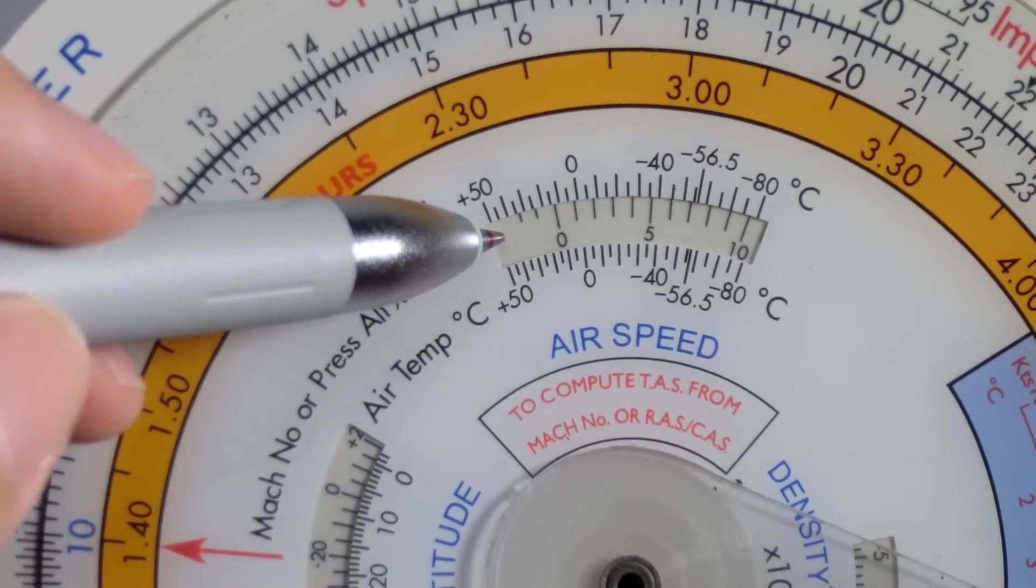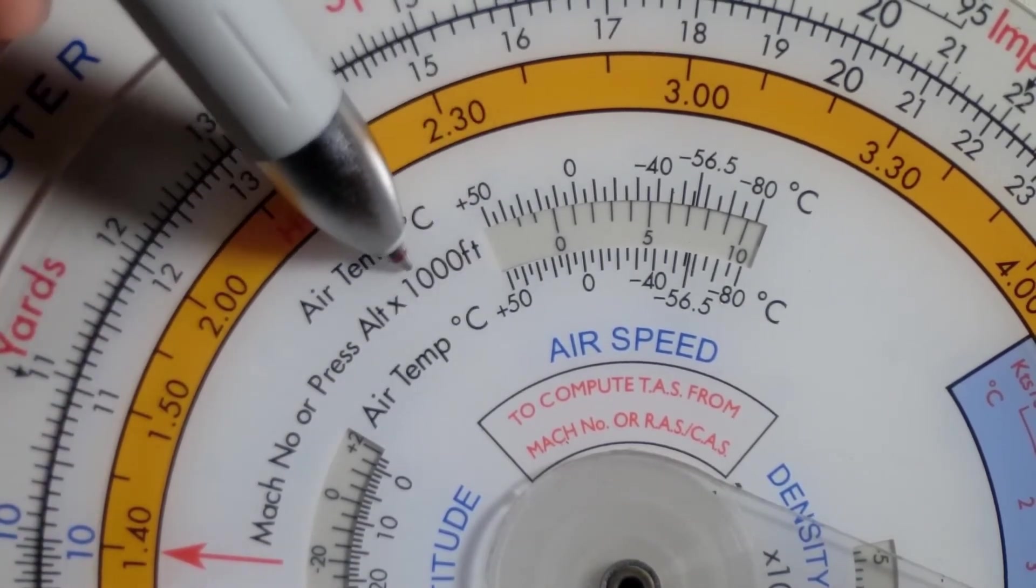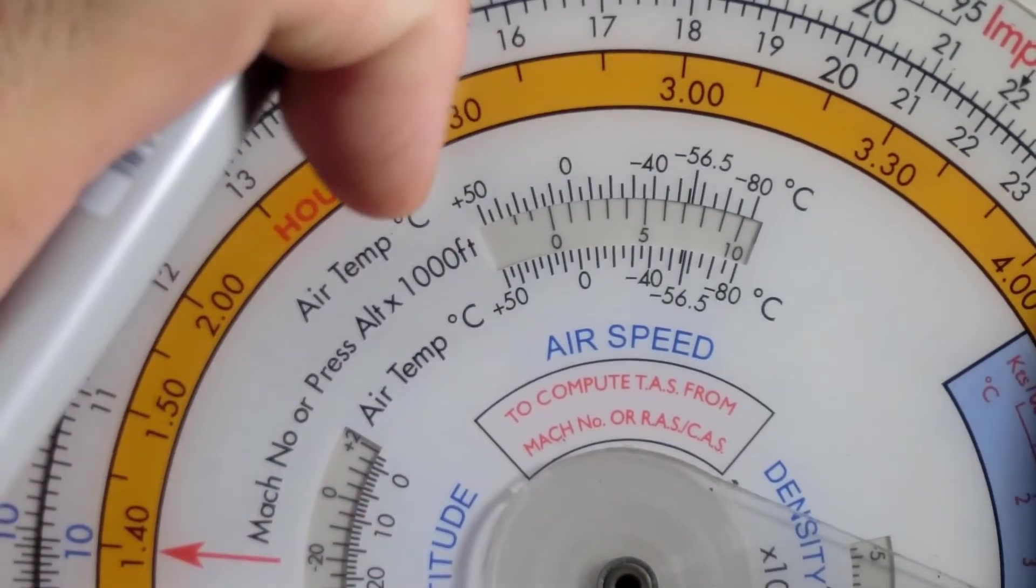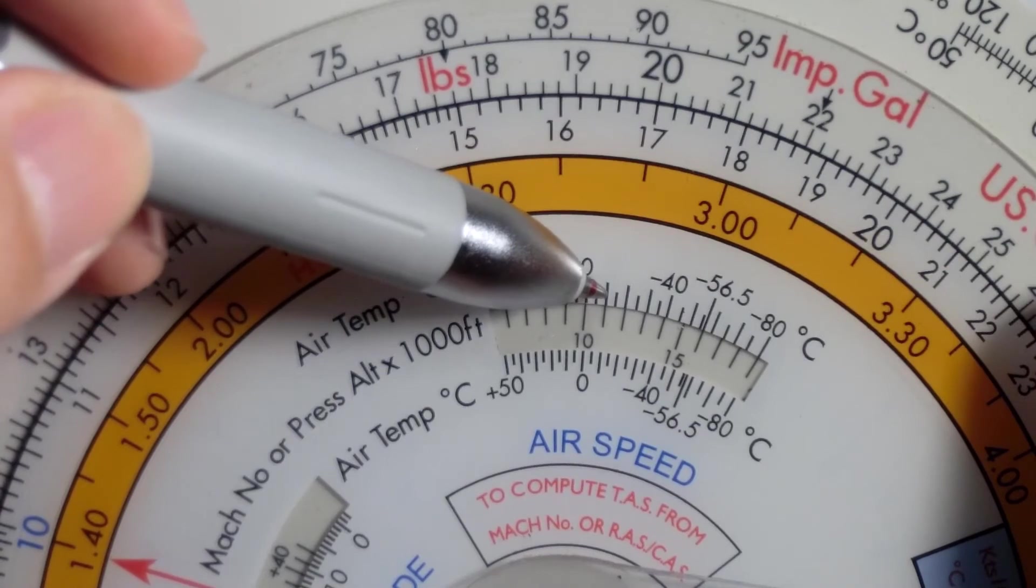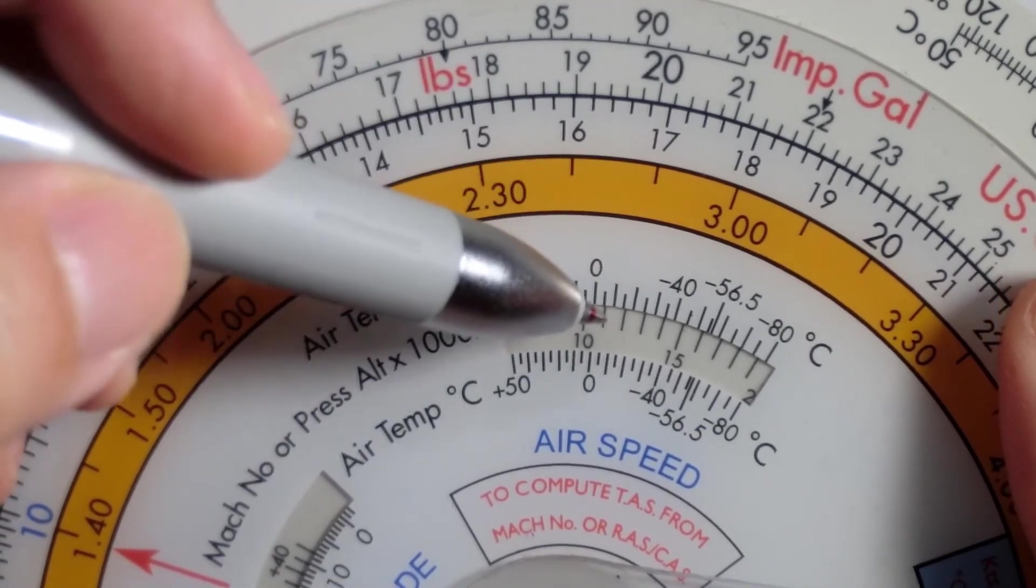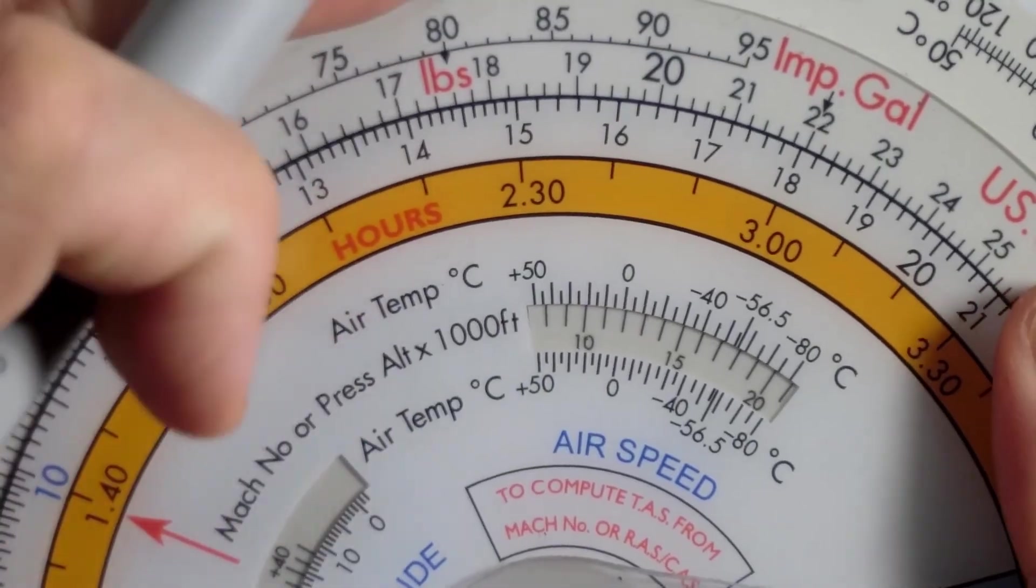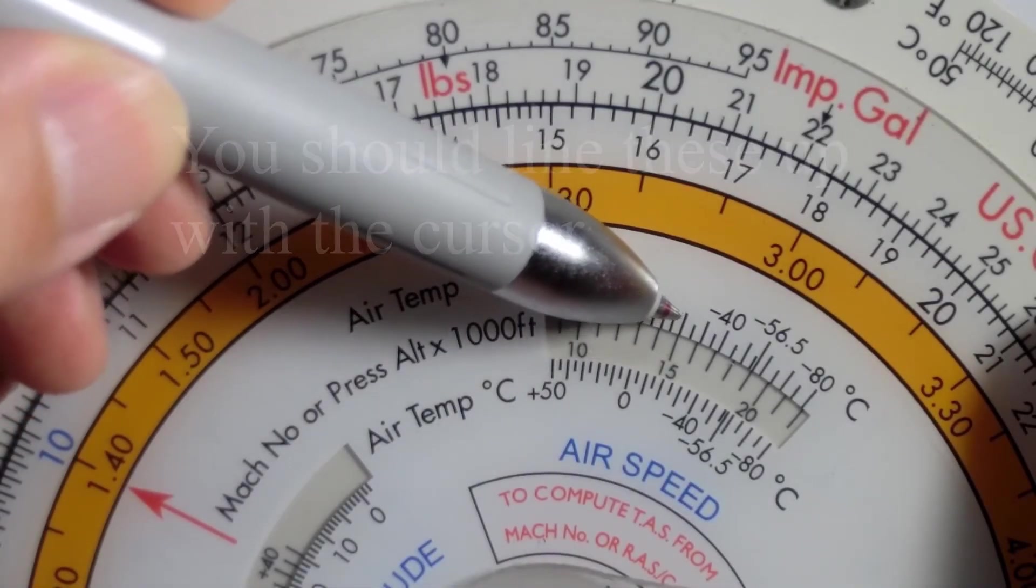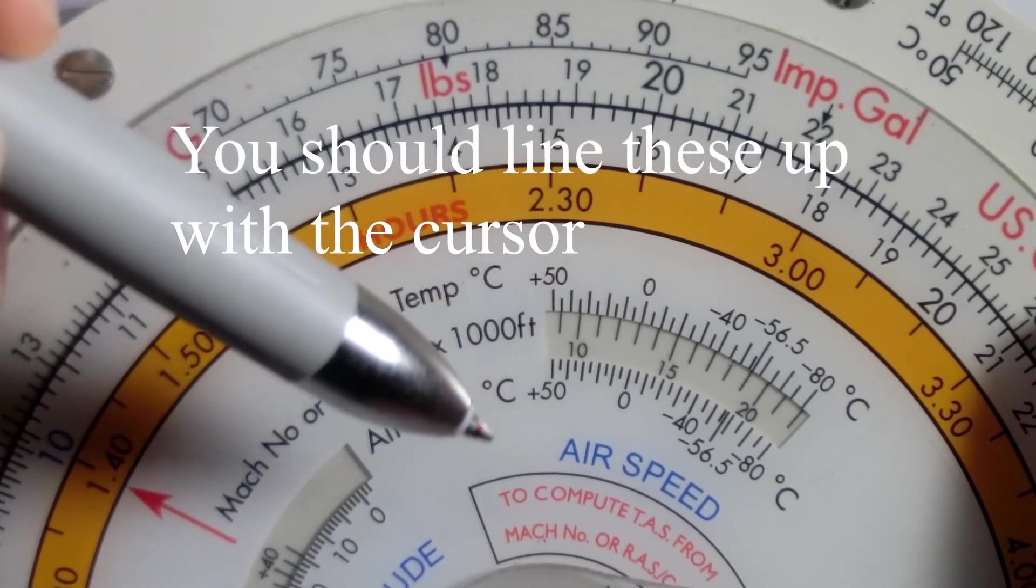At 15,000 feet, we would look at pressure altitude and basically look for 15 in the window. Negative 20 would be here. And I'm going to bring negative 20 in line with 15,000 feet. So there you go. I have 15,000 feet and the corrected outside air temperature is negative 20.